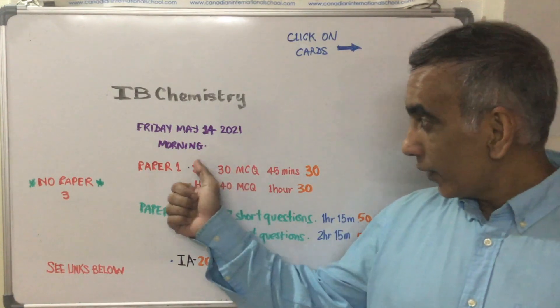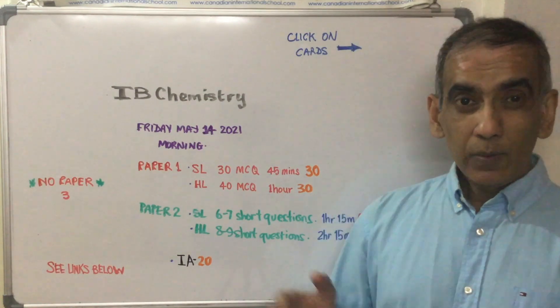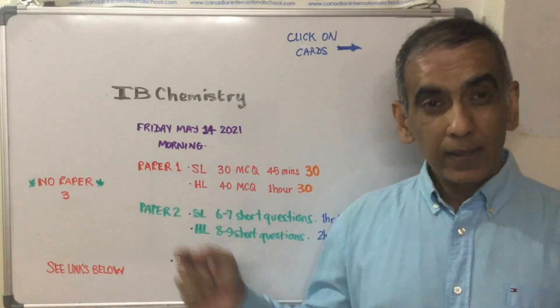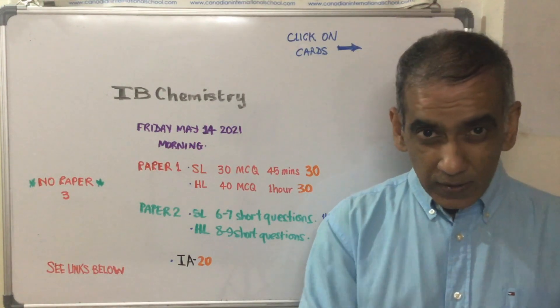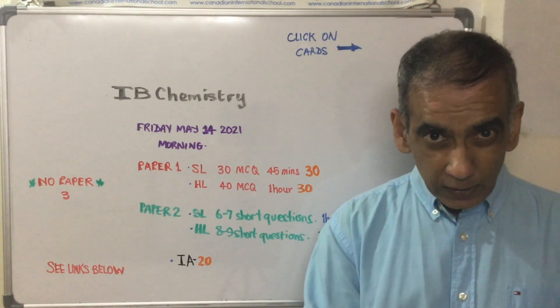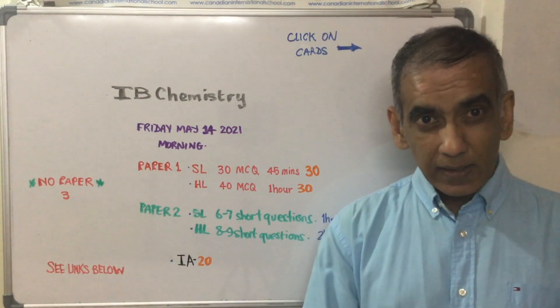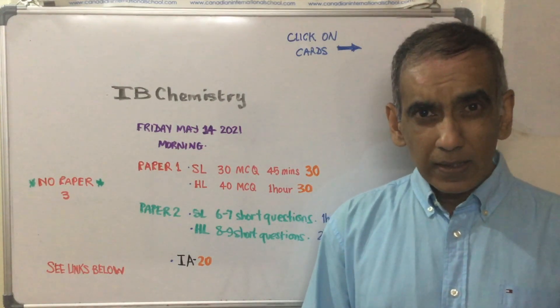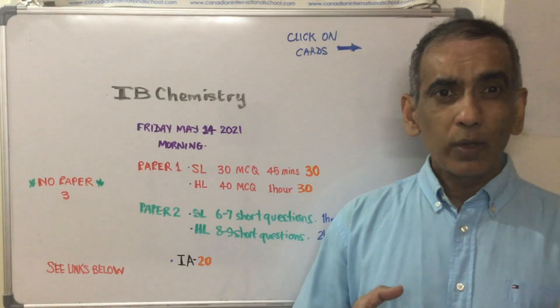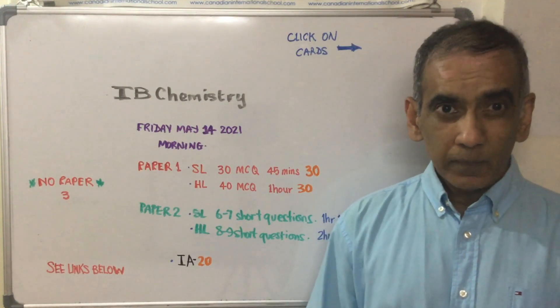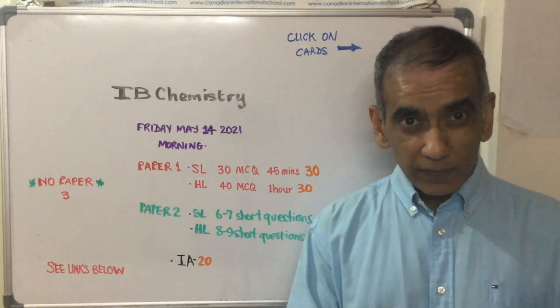On Friday the 14th of May in the morning, HL and SL students will be sitting for paper 1 and paper 2. But important to note that this year in 2021 there will be no paper 3 because the IB has decided that due to the pressures of the COVID-19 situation, schools, teachers, and students would have found it very difficult to work remotely, and they have decided to remove paper 3 from the final assessment.